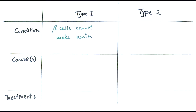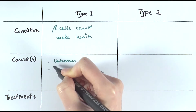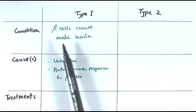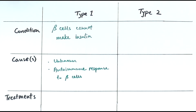This is because the beta cells of people with type 1 diabetes cannot make insulin. Scientists are still trying to determine the exact cause, but one well-supported explanation is that type 1 diabetes is actually an autoimmune response where your own immune system attacks and kills the beta cells, resulting in too few beta cells to produce sufficient insulin.